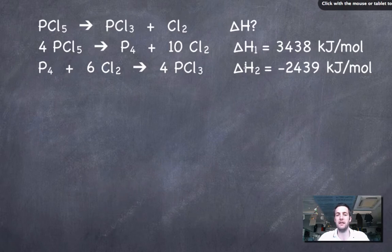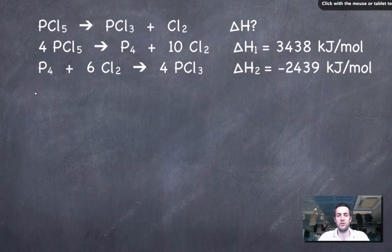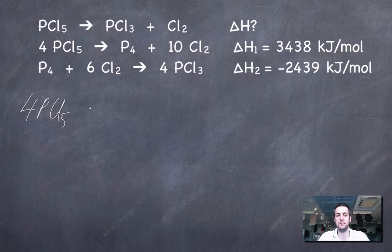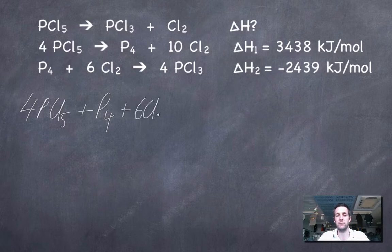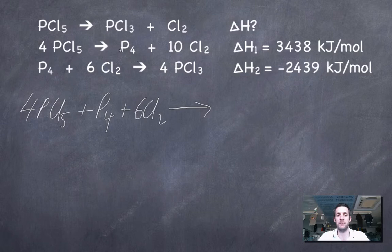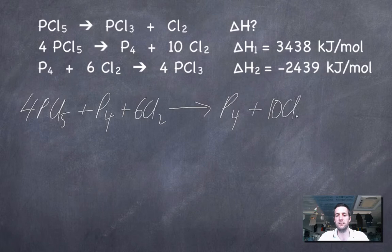Now let's add these two equations. We go 4PCl5 plus P4 plus 6Cl2—because now I've done everything on the left of the arrows, let's do the things on the right—P4 plus 10Cl2 plus 4PCl3.